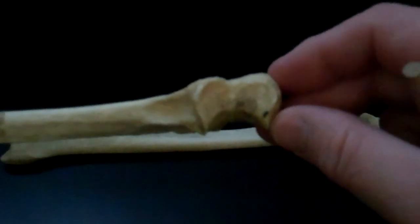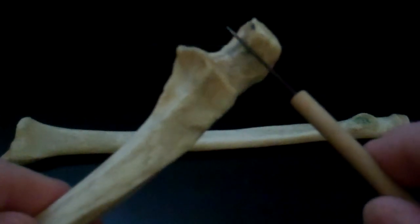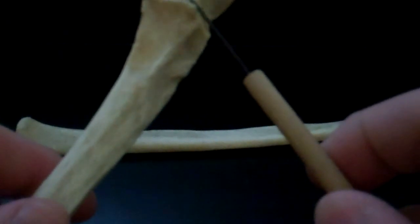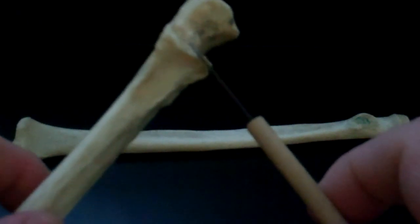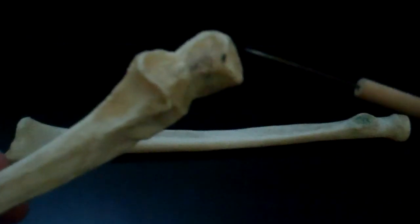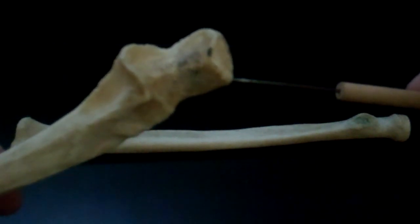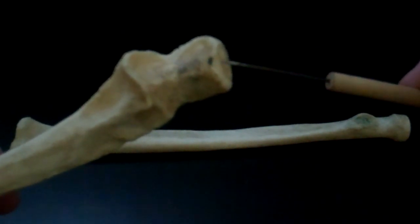This is a left ulna. This is the trochlear notch, sometimes referred to as the semi-lunar notch. On the front ridge of this semi-lunar notch is the coronoid process. The top of the notch is the olecranon process, which locks into the olecranon fossa.